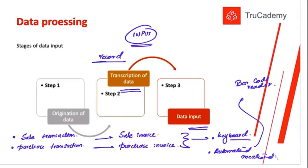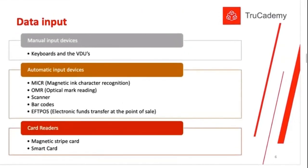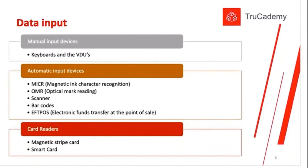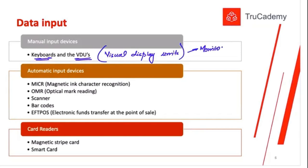Now, what are the methods we can use to input data? First, we can use keyboards and VDUs — visual display units. Sarah, what are VDUs? Visual display units — monitors, in simple words. So the technical term for monitors is visual display units, and we can use monitors and keyboards to input data.